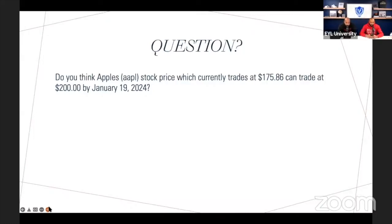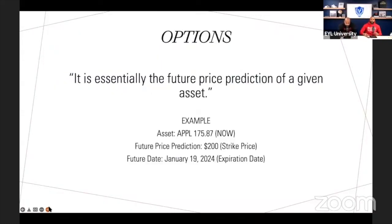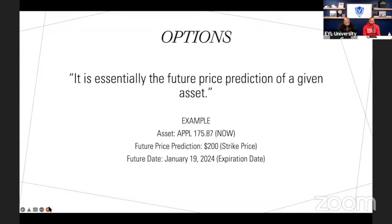You just did it for the growth. We're going to talk about what it is when it grows and when it depreciates, when it falls. There's two types. So everybody got the question right. Essentially, the future price prediction of a given asset is what you just did. The asset was Apple — that was a stock you chose. I gave you the price, what it is now. The future price prediction was $200, and that's the strike price. The future date — January 19th, 2024 — that's a little over two years away, and that's the expiration date. You're giving yourself a specific time to have this number be hit. It doesn't have to even hit $200, and we'll talk about why, because there's money that can be made either way — if it makes it or if it doesn't.